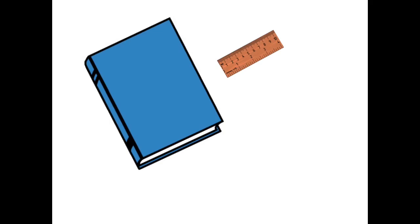When we measure something, it can only be as precise as the measuring tool we are using and the person taking the measurement. So if I have this book here and I tell you that the width is 14.2 centimeters and the height is 20.1 centimeters, with this ruler, these measurements are reasonable — I can measure to that level of precision.